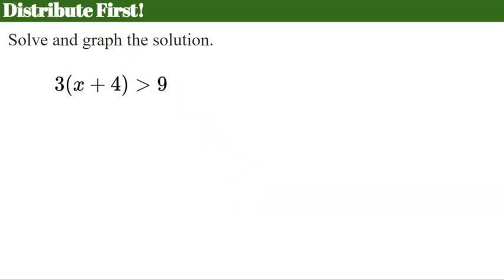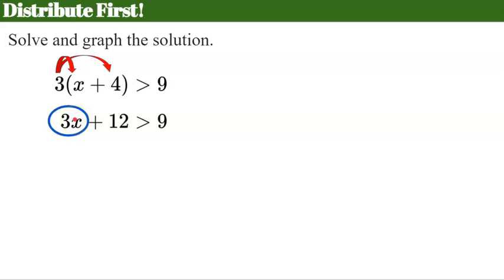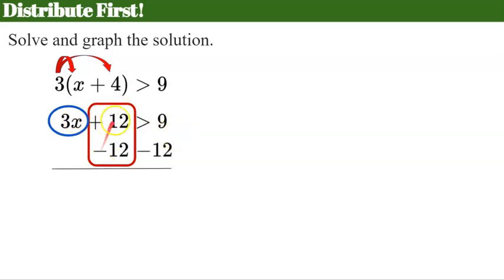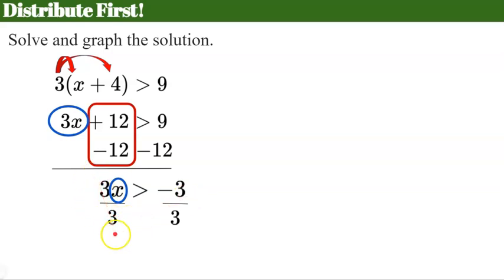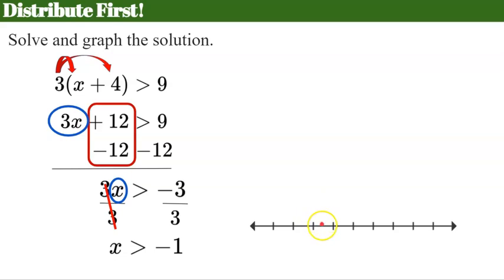Here's one where we have to distribute first. So we do 3 times x and 3 times 4, which gives us 3x plus 12. Now we identify our variable term — it's being added by 12. We create our zero pair by subtracting 12 from each side, leaving 3x greater than negative 3. 9 subtract 12 is negative 3. x is being multiplied by 3, so the inverse is to divide by 3 on both sides. 3 divided by 3 is 1, leaving me x greater than negative 1. We need a negative 1 on our number line, an open circle because it is not equal to, shaded to the right.